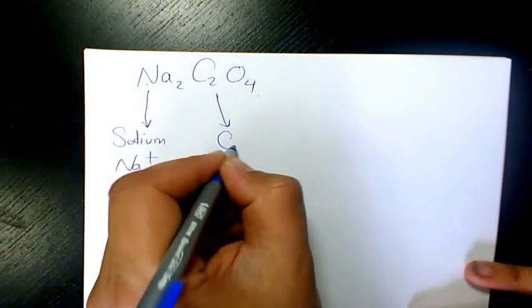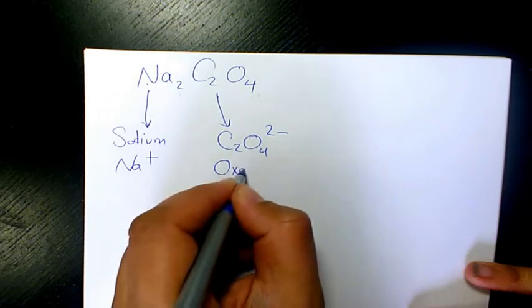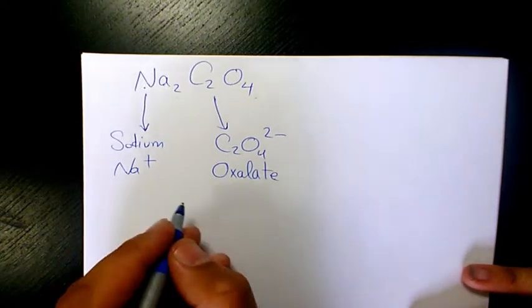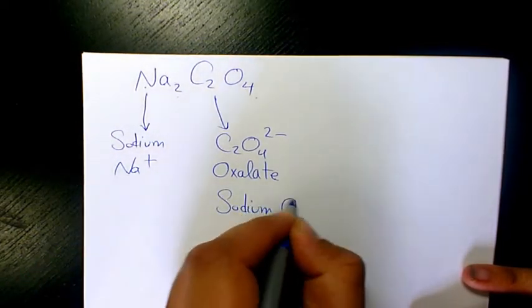And C2O4 is C2O4 2 minus, which is called oxalate ion. So together it's going to be sodium oxalate.